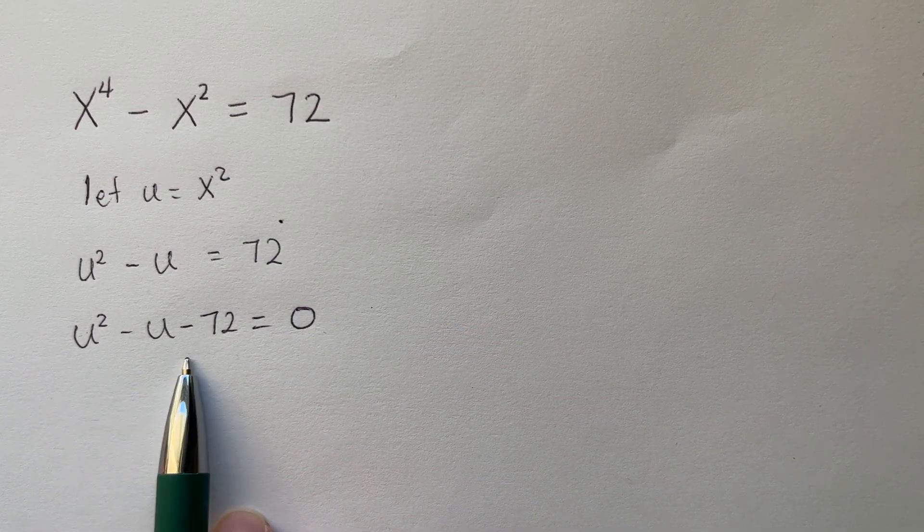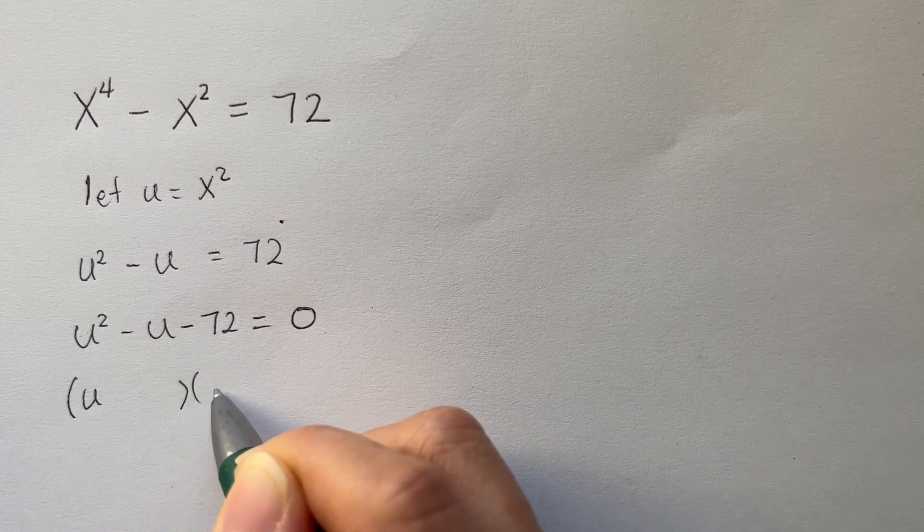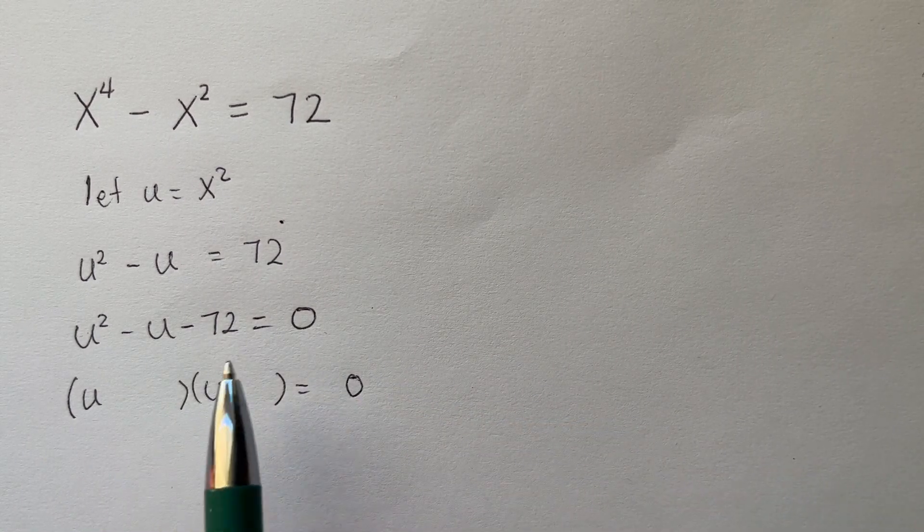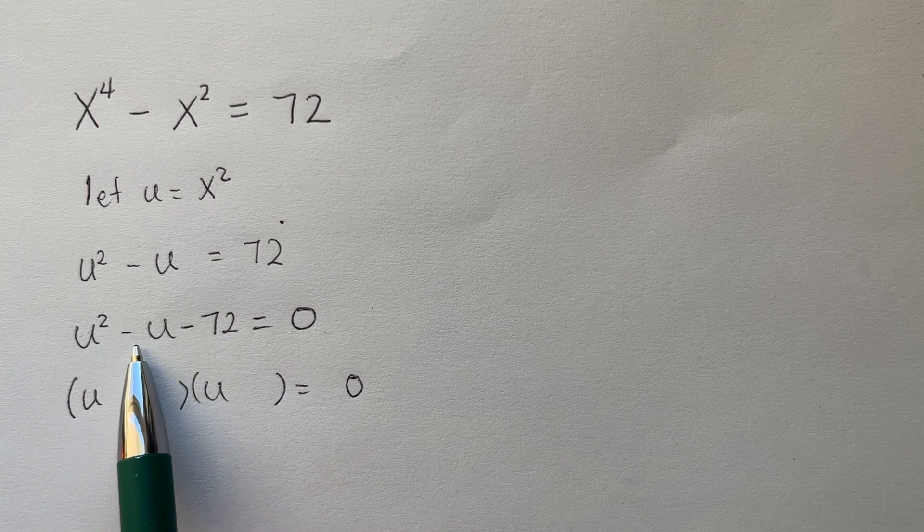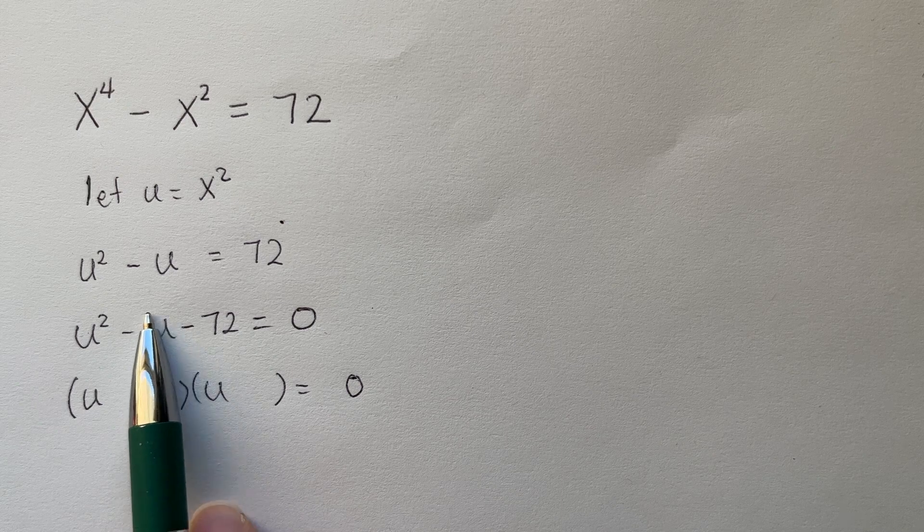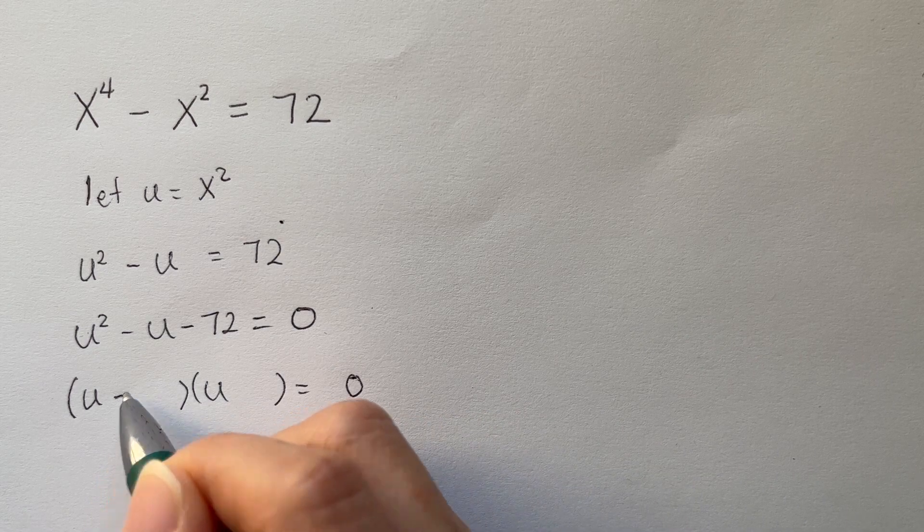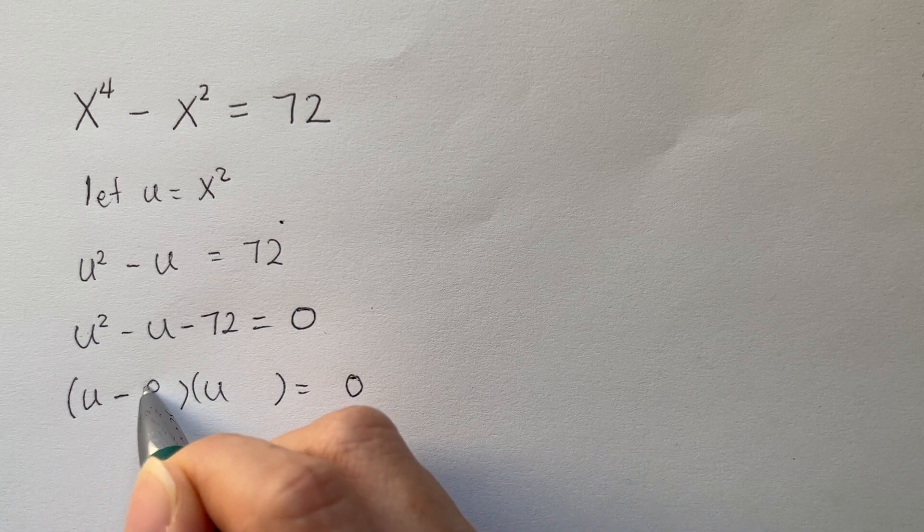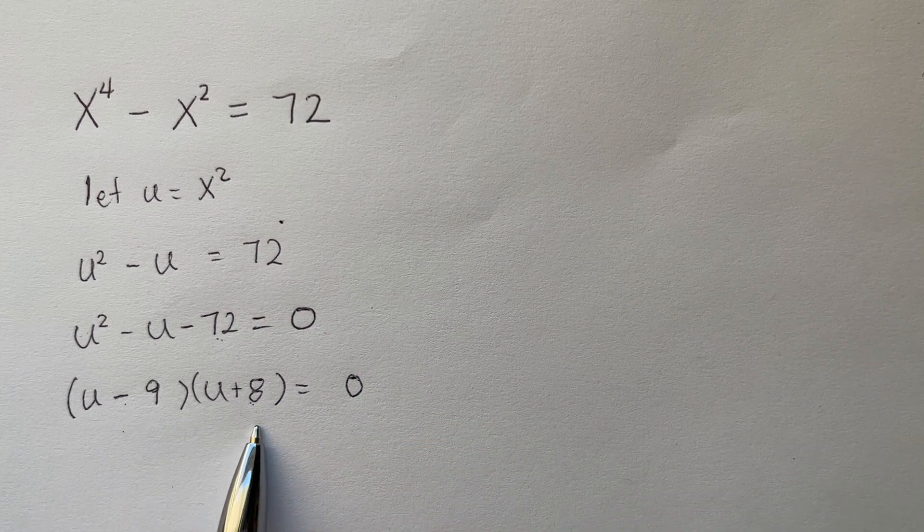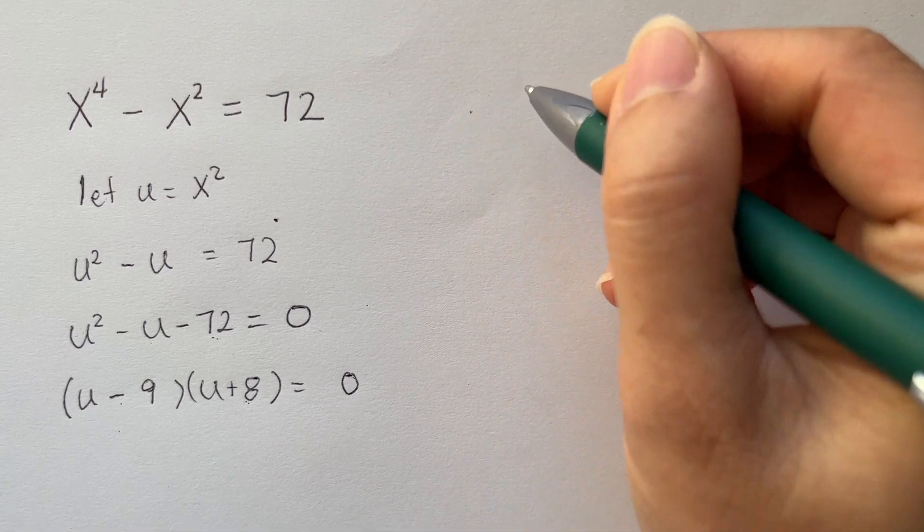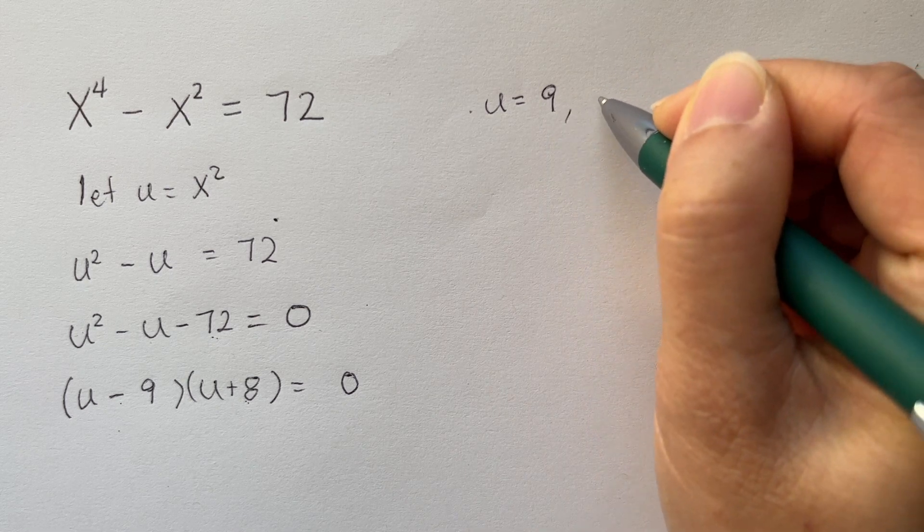Now, this is a quadratic formula, and we can solve this. We need to take the factors of 72, where when you add them together, it's going to become negative 1. And so we can use minus 9 plus 8. So we get u is equal to 9, and u is equal to negative 8.